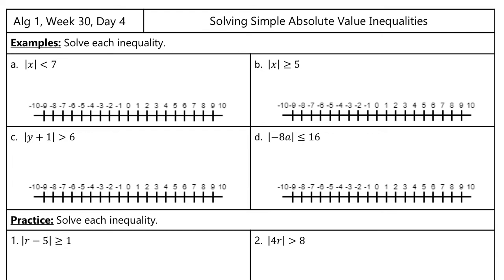This first one says the absolute value of x is less than 7. That means that whatever x is, it has to be less than positive 7. But what else has to be true because of it being absolute value? If it was just less than 7, it would just go on forever that way, but there's a point where this isn't going to work anymore. The absolute value of 6 works, absolute value of 5 works — that's less than 7 — absolute value of 0 is 0, which is less than 7.